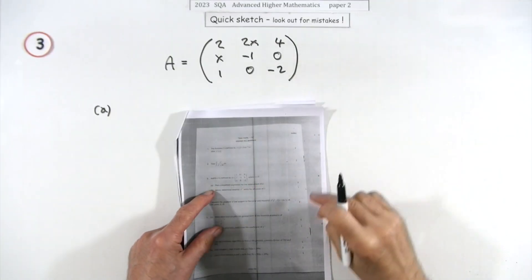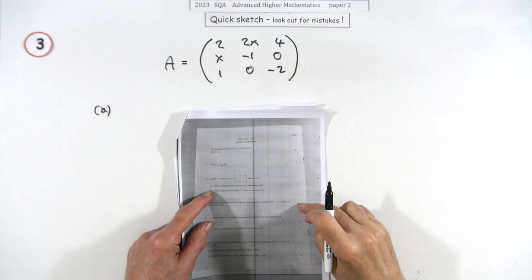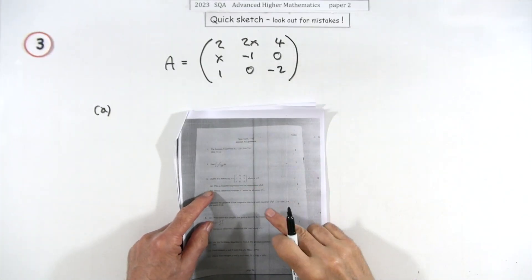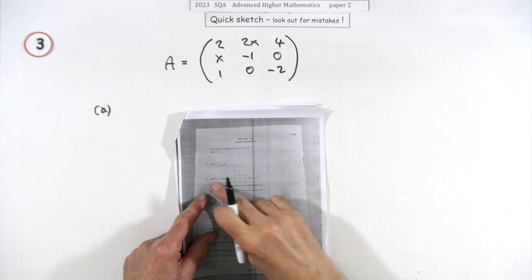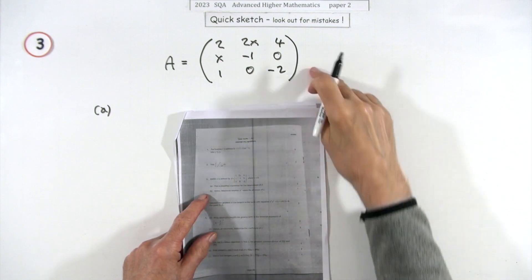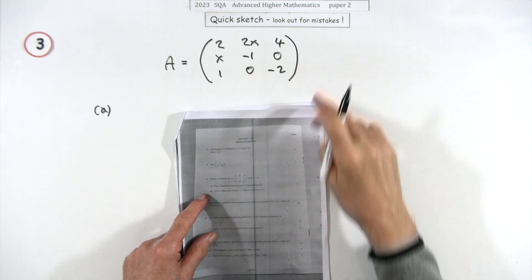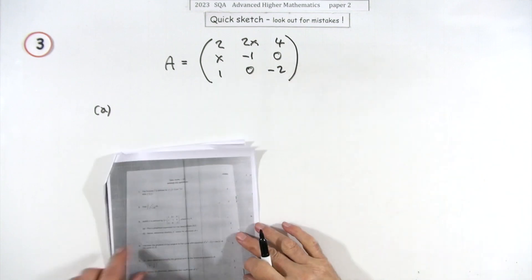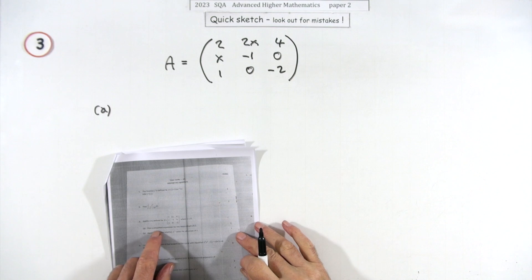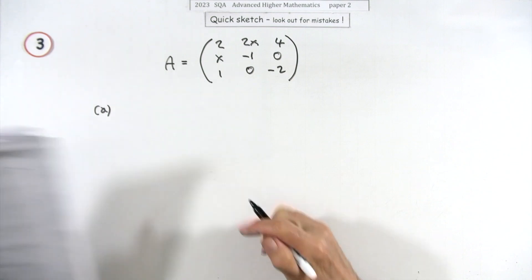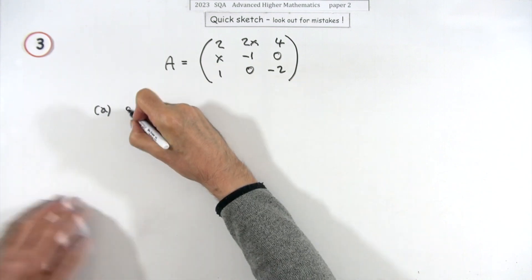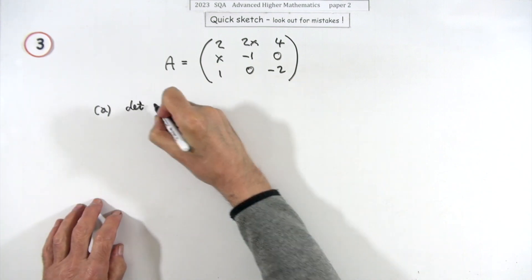Number three from paper two of the 2023 Advanced Higher — a three-mark question. You've got a three-by-three square matrix; find a simplified expression for the determinant of A.